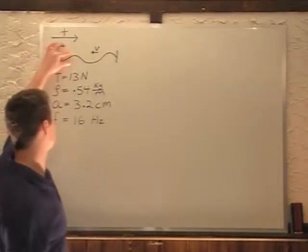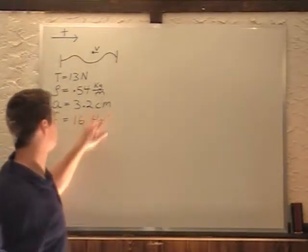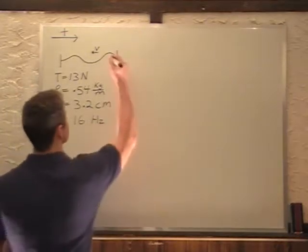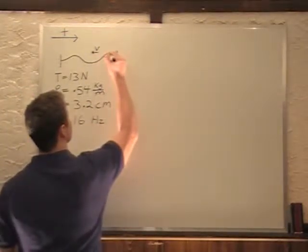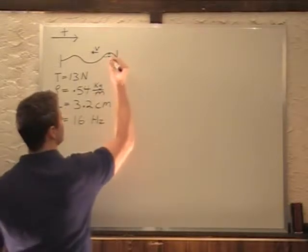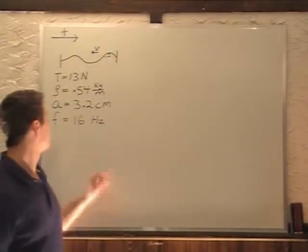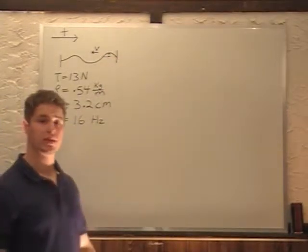So the string weighs 0.54 kilograms for every meter you have of it. The amplitude of this wave in the string is 3.2 centimeters. Now that distance is measured from the center to the top of the wave. That's the amplitude there, 3.2 centimeters.